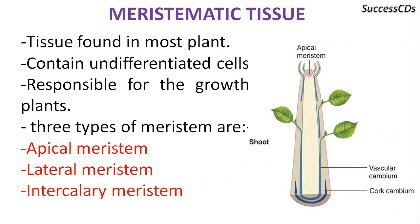Meristematic tissue is found in most plants and it is responsible for the growth of the plant. Cells in these tissues can divide and form new tissues. It is of three types. Apical meristem is present at the tip of stem and root and is responsible for the growth in length.